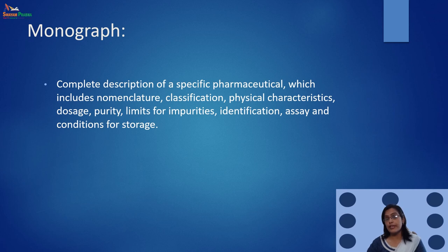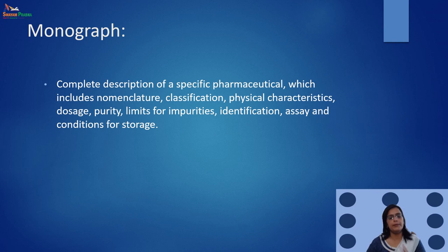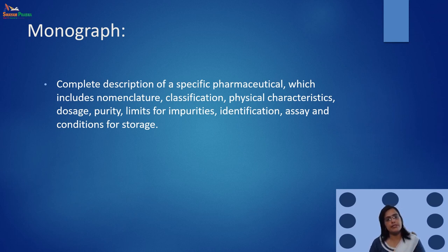It is also very important to know about the monograph. A monograph is a complete description of a specific pharmaceutical which includes nomenclature, classification, physical characteristics, doses, purity and limits for impurity, identification, assay, and the conditions of storage. This is the definition of a monograph, and a monograph of a specific drug contains all of these following things.